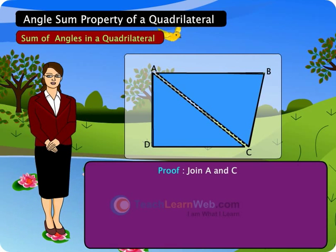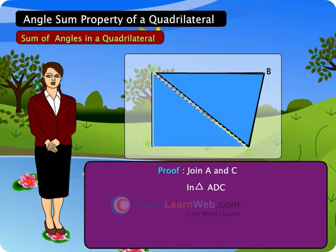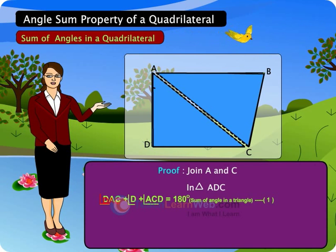That is, triangle ADC and triangle ABC. In triangle ADC, angle DAC plus angle D plus angle ACD is equal to 180 degrees.